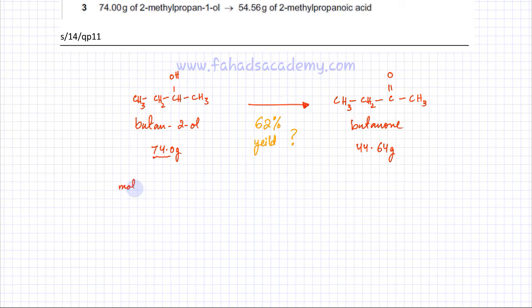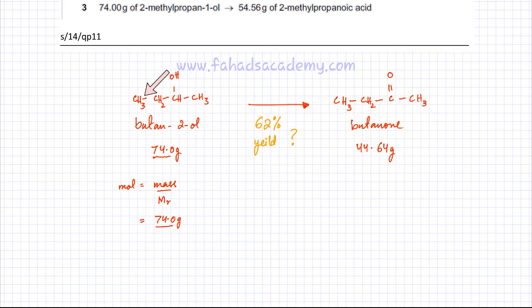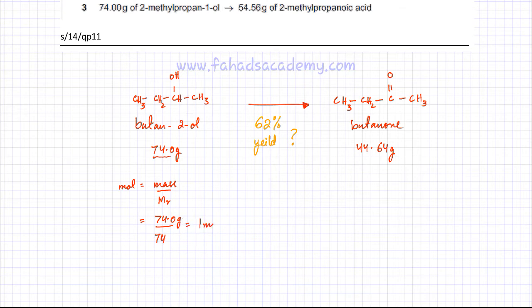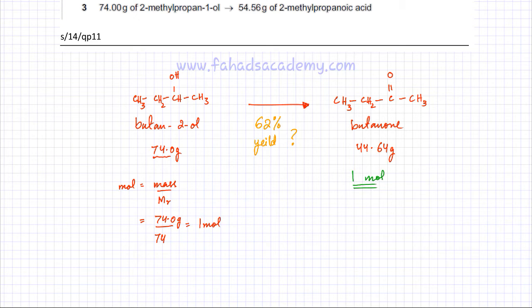Moles equals mass divided by Mr. For butane-2-ol, the mass is 74 grams. Counting all atoms: 4 carbons (4×12), 1 oxygen, and 10 hydrogens gives an Mr of 74. So we have exactly one mole of butane-2-ol. Based on the 1:1 ratio, one mole of butane-2-ol should theoretically produce one mole of butanone.